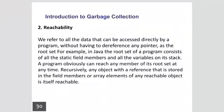Reachability refers to all the data that can be accessed directly by a program without having to dereference any pointer — this is called the root set. For example, in Java, the root set of a program consists of all the static field members and all the variables on its stack. A program can obviously reach any member of its root set at any time.